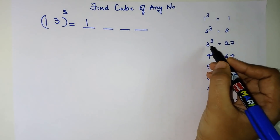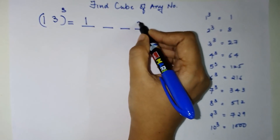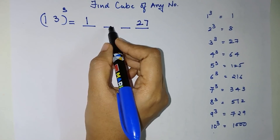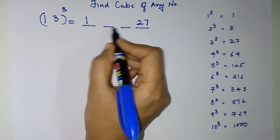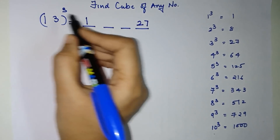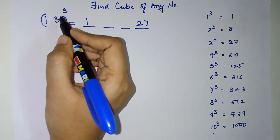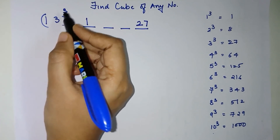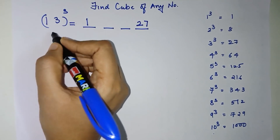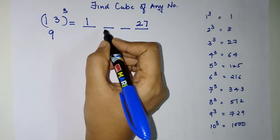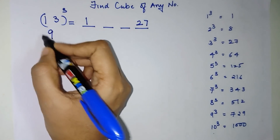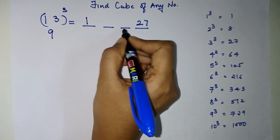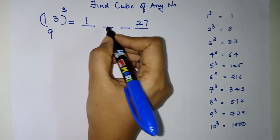Cube of 3, that is 3³, equals 27. Now, in order to find the middle two parts, we multiply all the numbers: 1 × 3 = 3, and 3 × 3 = 9. This number 9 is the common multiple for both of the middle two parts.